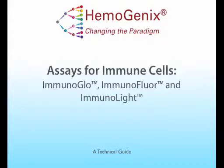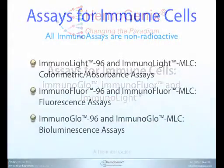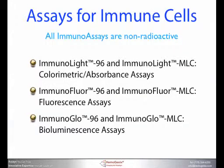It's our goal at Hemogenics to provide you with assays that not only work but provide you with results you can trust. All of our immunoassays measure lymphocyte proliferation or inhibition, which can also be cytotoxicity, including assays for mixed lymphocyte cultures. These assays are non-radioactive. Plate readers can measure absorbance, fluorescence, and some even measure luminescence. We've developed assays for all three types of output: the ImmunoLight assays require an absorbance reader, the ImmunoFloor assays a fluorescence plate reader, and the ImmunoGlow assays a plate luminometer.